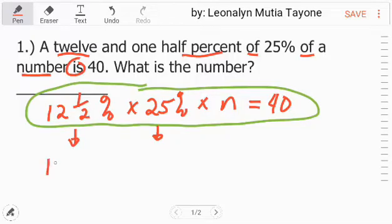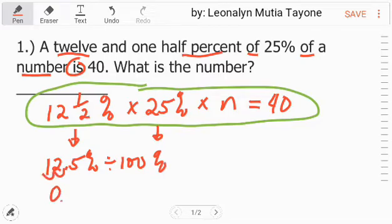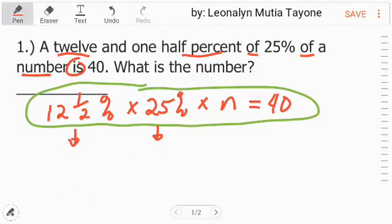Now 12 and one-half percent, or this is 12.5 percent, if you divide by 100 percent, move the decimal to the left 1, 2, so it becomes point 1-2-5. So 12 and one-half percent is equivalent to point 1-2-5 in decimal form.